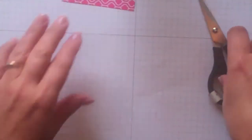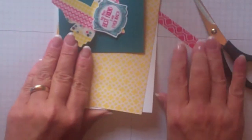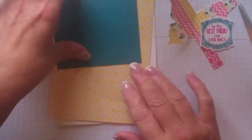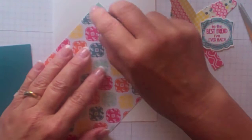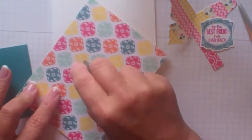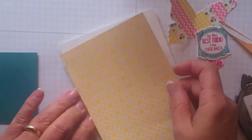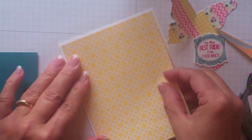So now I think we can go ahead and put together our card. These are all our little pieces. The first thing I'm going to do is just add our DSP. This is the gingham garden DSP that matches that washi tape that we used on the butterfly.